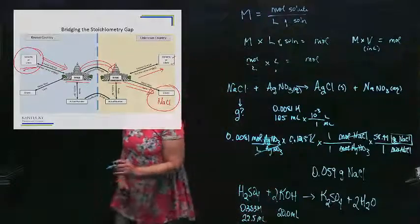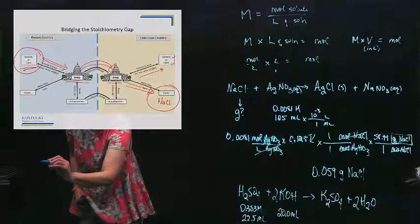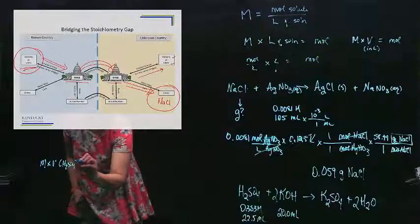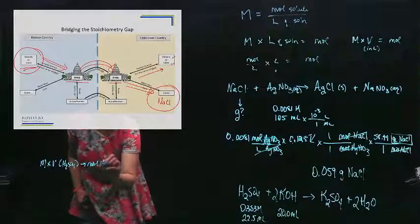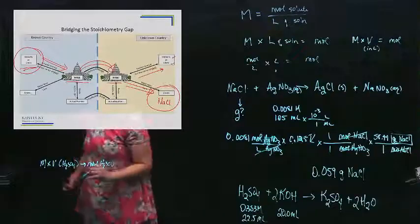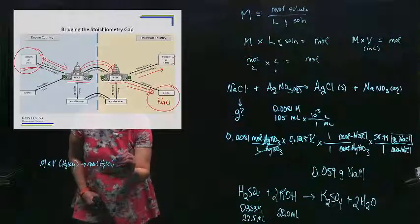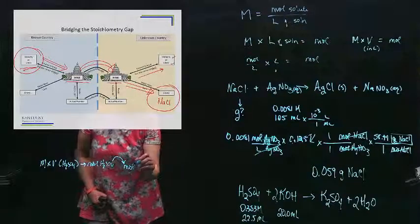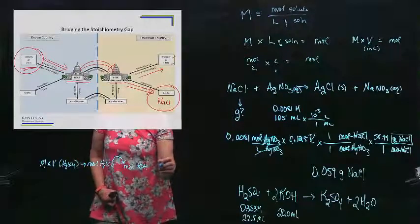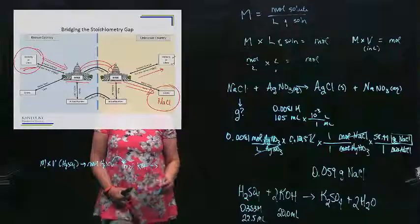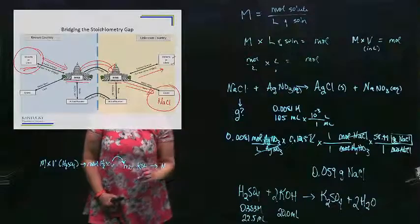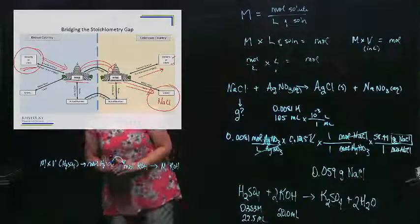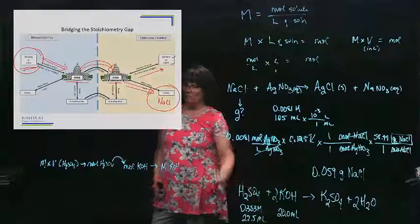I'm going to just kind of plot my strategy out. I want to take my molarity times the volume of H2SO4 will get me to moles of H2SO4. So I got into moles on my known country. Then I can go over the bridge to moles of what they're asking me about. And in this case, they're asking about KOH. And then we can finish the problem. What do they want to know about KOH? They want to know the molarity of that KOH. That's where we're trying to finish. So those are the steps that I am going to follow with this information.